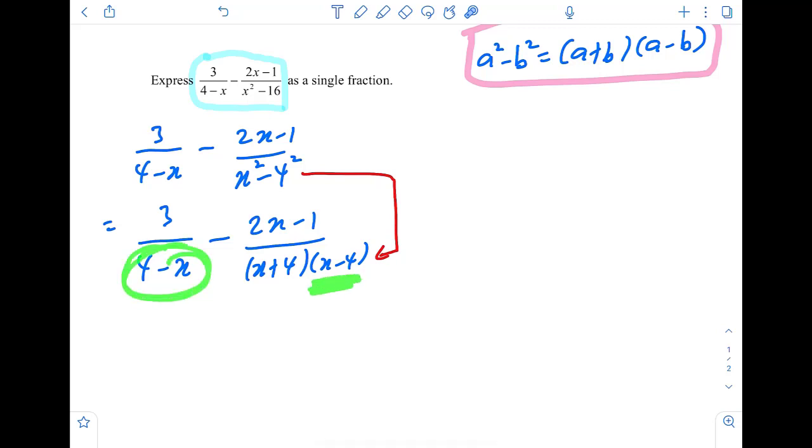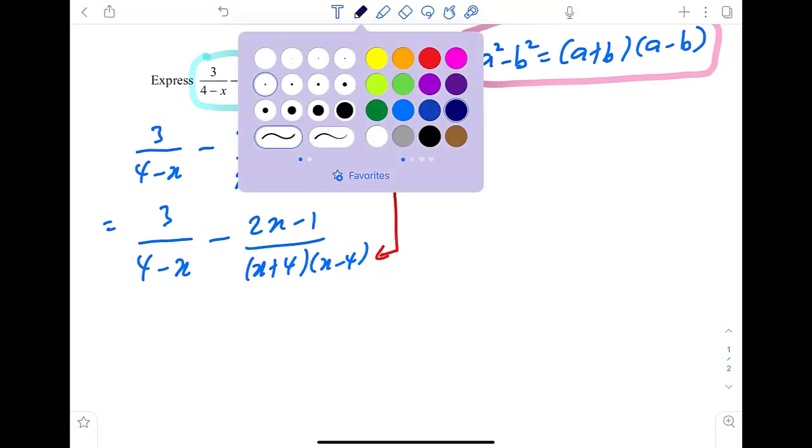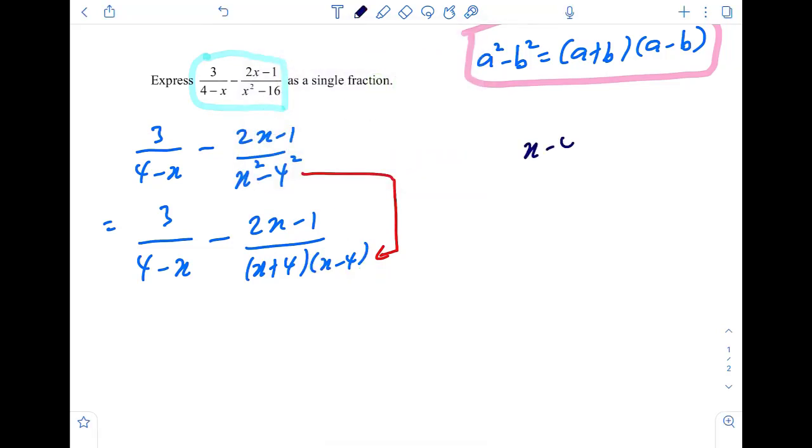This is 4 minus x versus x minus 4. Now we can quickly change this to 4 minus x. Remember friends, x minus 4 is nothing but, if you take out negative, if you take out negative, you will have negative 4 minus x like this. Why you take out negative? Because you want to flip this. We have flipped this.